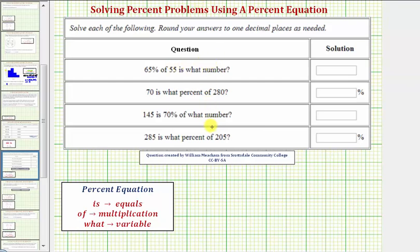We want to answer the following percent questions. To answer these questions, we'll be using the percent equation and these key words, where 'is' means equals, 'of' means multiplication, and 'what number' or 'what percent' represents the unknown, so we write down the variable.